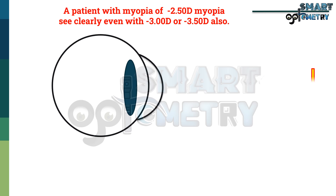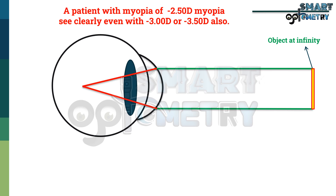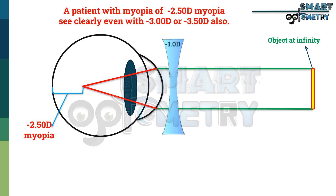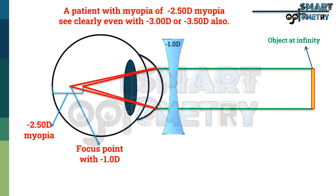Without correction, when the patient is focusing at infinity, rays coming from the object focus in front of the retina. This distance from the retina to the point where rays focus is equivalent to -2.5 diopters, as the patient has myopia of -2.5 diopters. If we place a -1 diopter concave lens in the spectacle plane, it will diverge the rays towards the retina. The patient will see clearer compared to before, but still won't be able to read the 6/6 line, as the patient is still having myopia of -1.5 diopters.